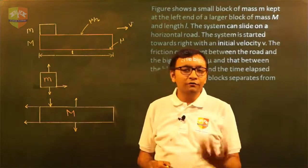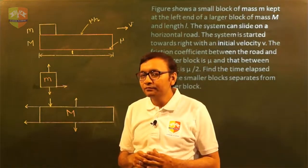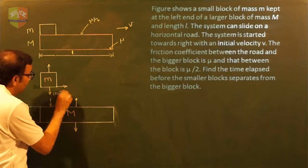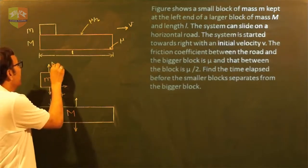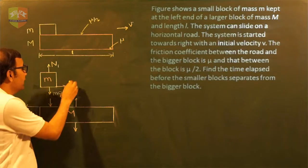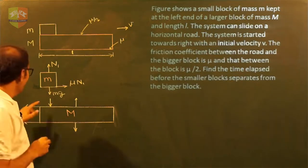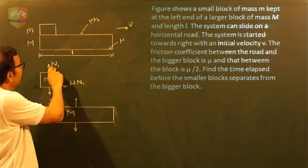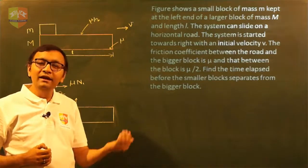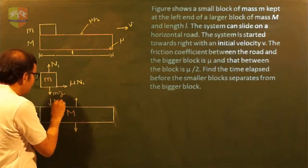Let us take these two masses one by one and represent all the forces and accelerations. For small mass m, the forces applied on it are: gravitational force mg downward, normal reaction N1 between capital M and small m, and a friction force of mu/2 times N1. Since this normal reaction is applied by capital M on small m, small m also applies an equal and opposite normal reaction — this pair is N1.